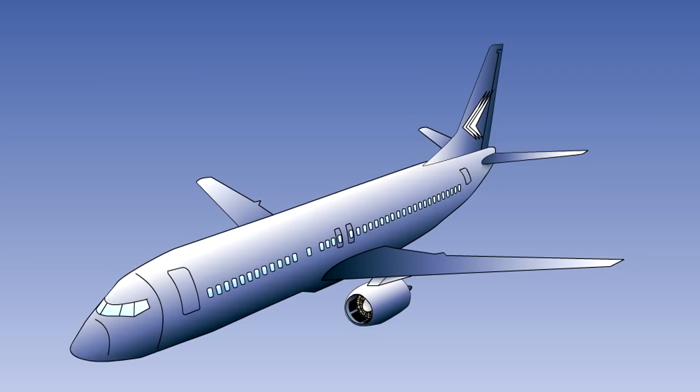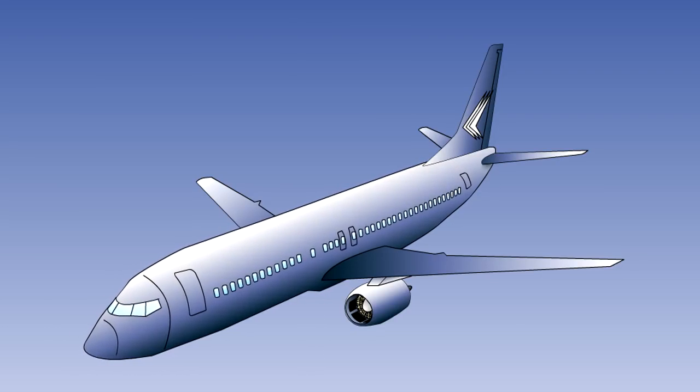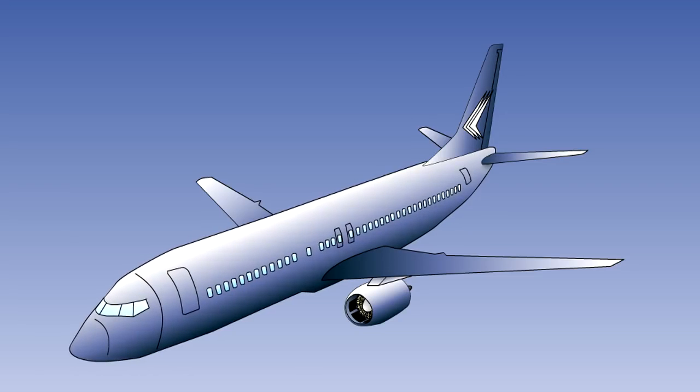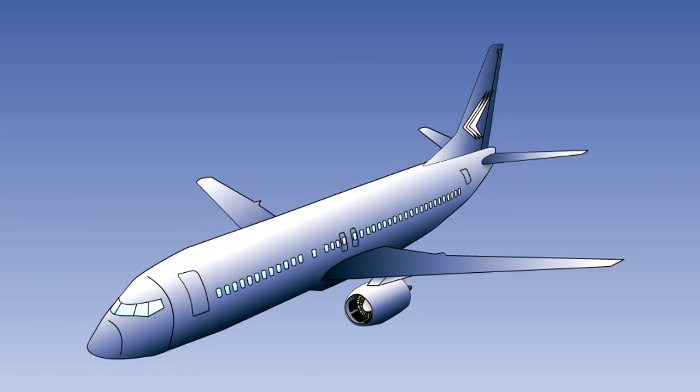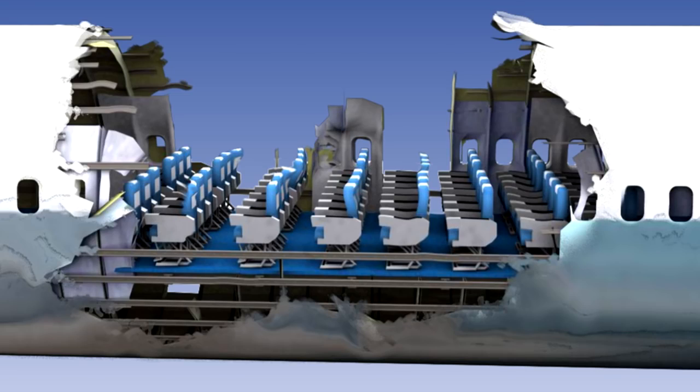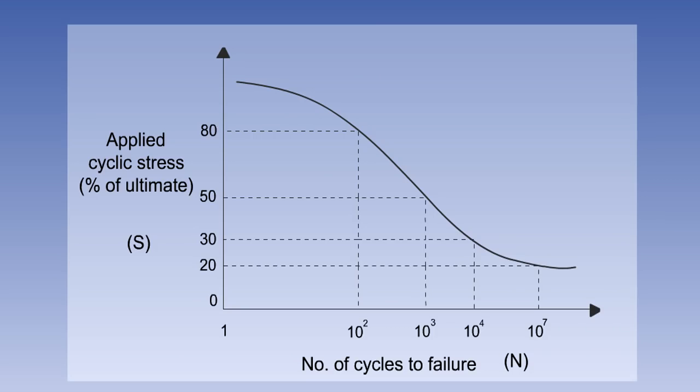A structure which is subject to continual reversals of loading, such as the landing gear or the fuselage of a pressurized aircraft, will fail at a load of less than would be the case for a steadily applied load. This is known as fatigue. The failure load level will depend on the number of reversals experienced. In high cycle fatigue situations, a material performance can be graphically characterized by an S-N curve, also known as a Völler curve.